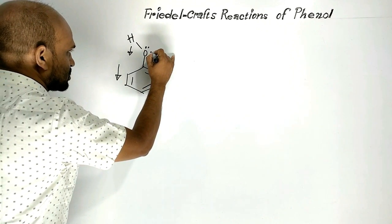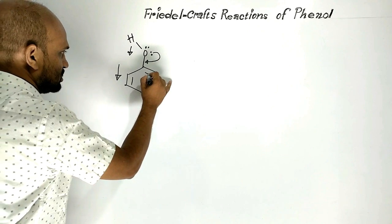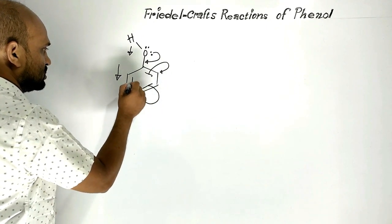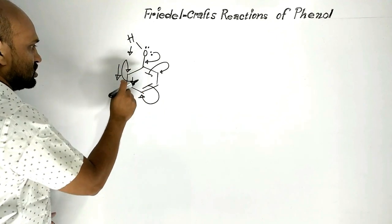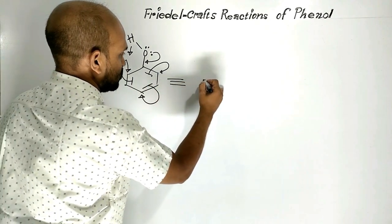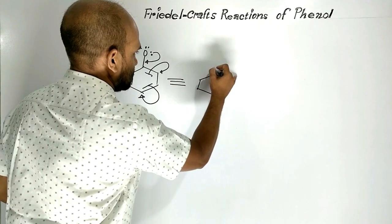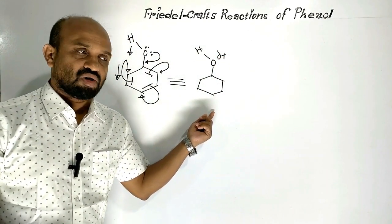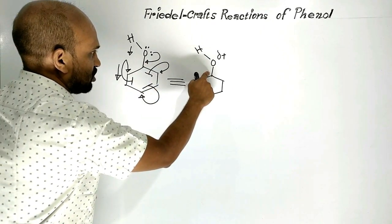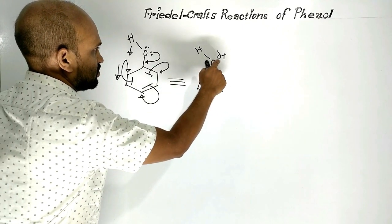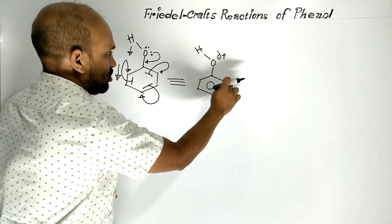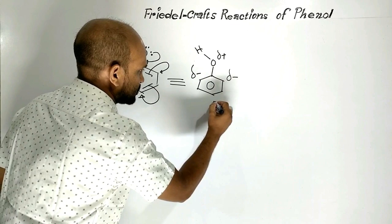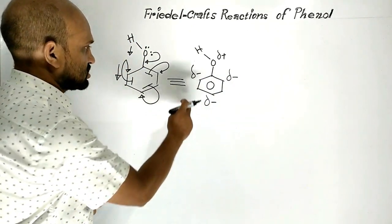The lone pair of electrons turns into a bond pair, and bond pairs turn into lone pairs through resonance. Oxygen becomes partially positive in charge because the lone pair of electrons of oxygen turns into a bond pair of electrons. That is why oxygen gets partially positive in charge. The ortho positions and the para position become partially negative in charge. This is the resonance hybrid of phenol.